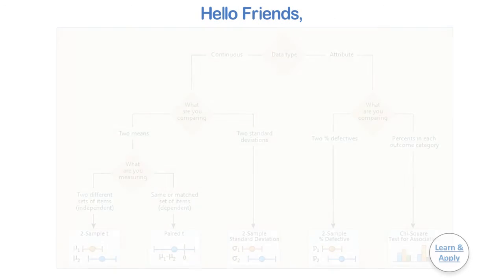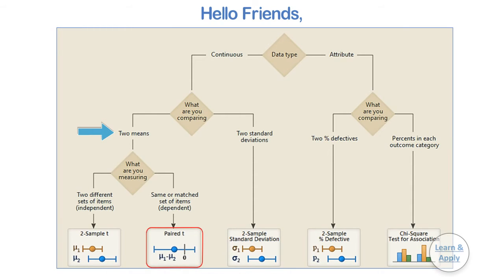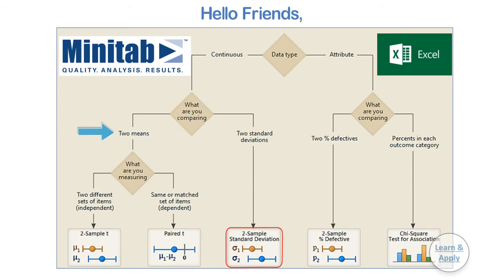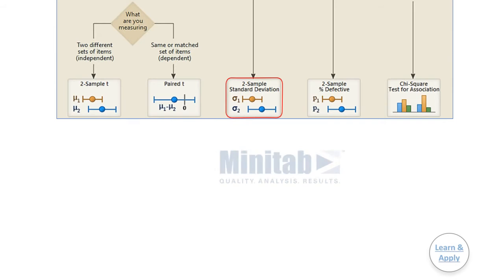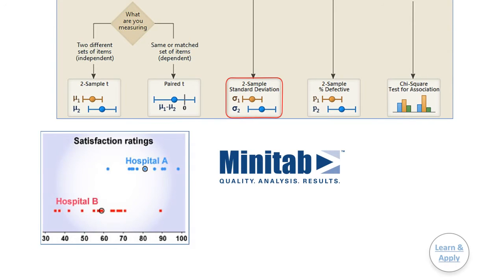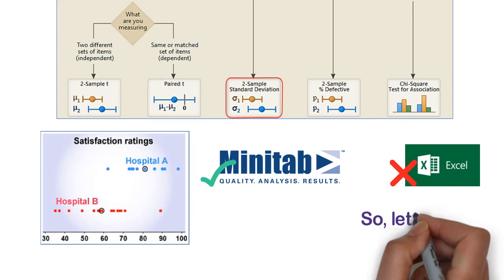Hello friends. In the last video, we had seen the second hypothesis test to compare the mean of two samples, i.e., Paired T-test in Microsoft Excel as well as Minitab software with the help of a practical example. In this video, we are going to learn the third hypothesis test to compare the mean of two samples, i.e., two-sample variance test or two-sample standard deviation test in Minitab software. As this test cannot be conducted in Microsoft Excel, you need to use statistical softwares like Minitab. So let's begin.